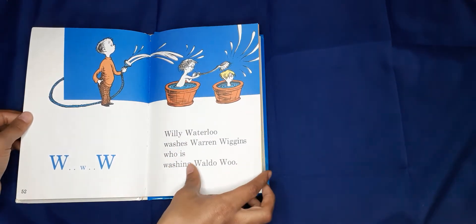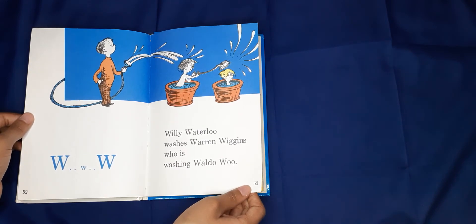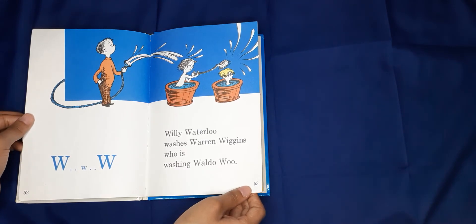W, W, W. Willie Waterloo watches Warren Wiggins, who's watching Waldo Wu.